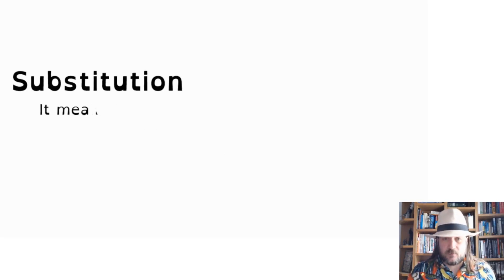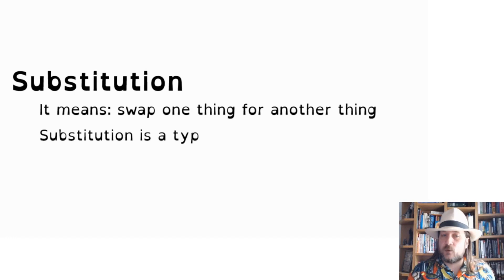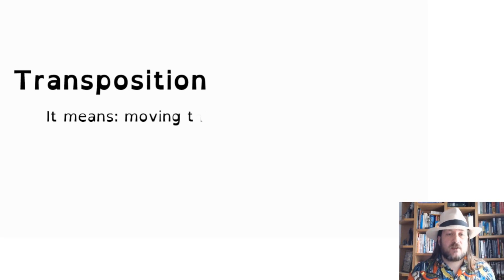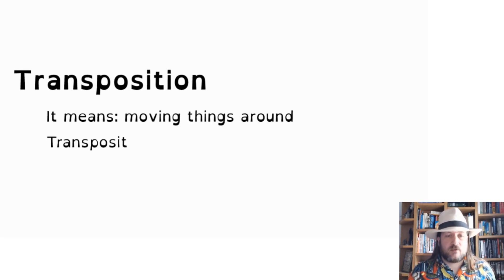Ciphers use two main techniques to make a clear text secret. The first one is substitution, which means switching one thing for another — just like a substitute in sports where one player is changed for another. The second one is transposition, which means to move things around without changing them in any other way.